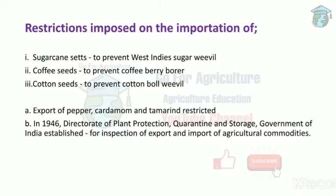There are restrictions imposed on importation. Sugarcane sets were banned to prevent the West Indies sugar weevil, a major pest affecting sugarcane. Coffee seeds were restricted to prevent the coffee berry borer, and cotton seeds to prevent the cotton boll weevil. Export of pepper, cardamom, and tamarind were also restricted. In 1946, the Directorate of Plant Protection, Quarantine and Storage of the Government of India was established for inspection of export and import of agricultural commodities.